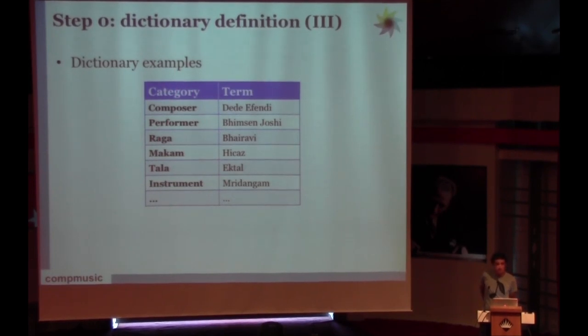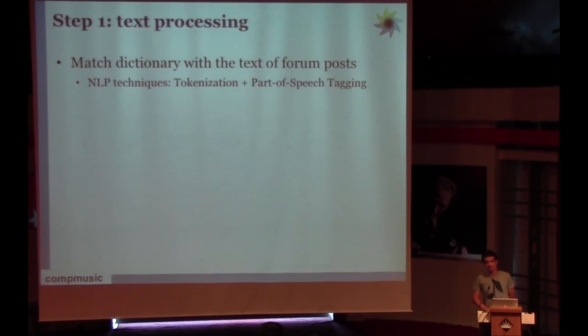This is an example of how the dictionary is formed. It's a category and the term, for example raga Bhairavi, makam Hijaz, and so on. Once we have this dictionary, our goal is to match this dictionary with the text from forum posts.